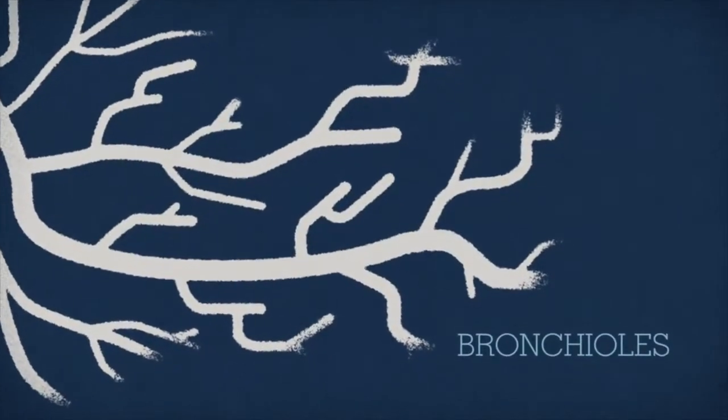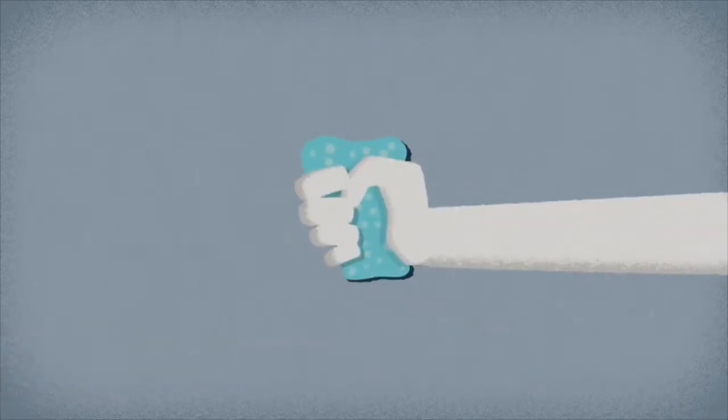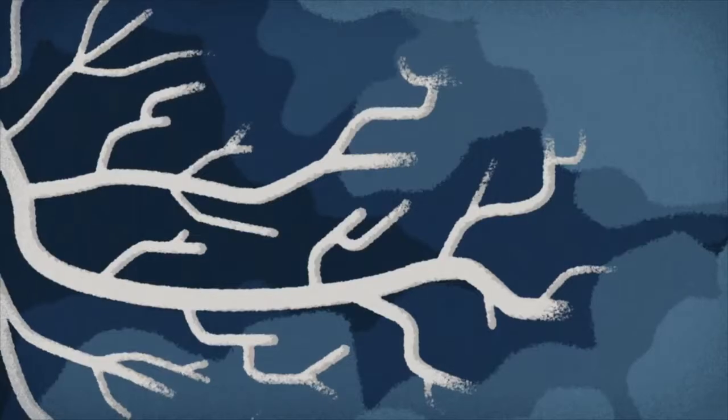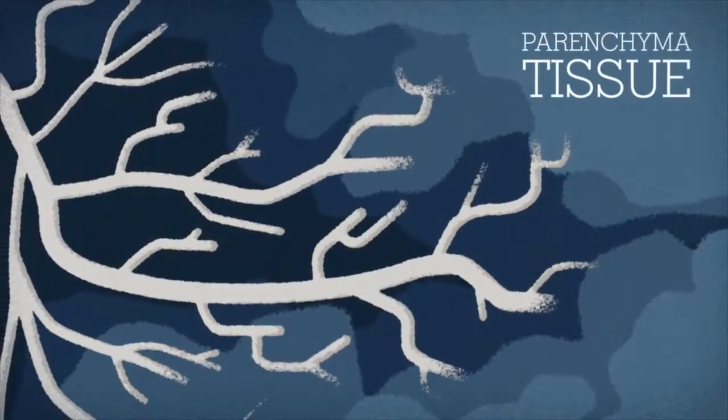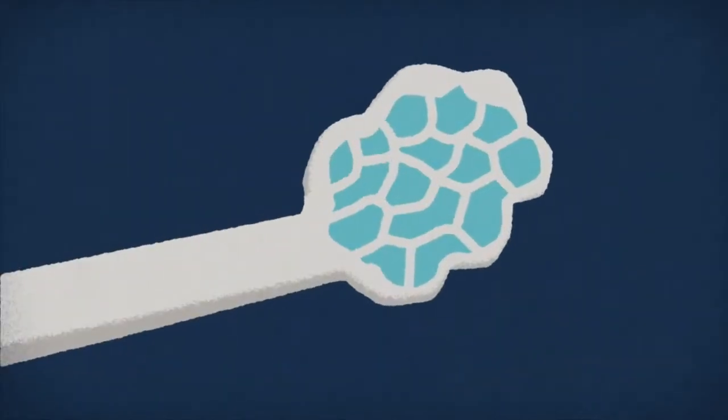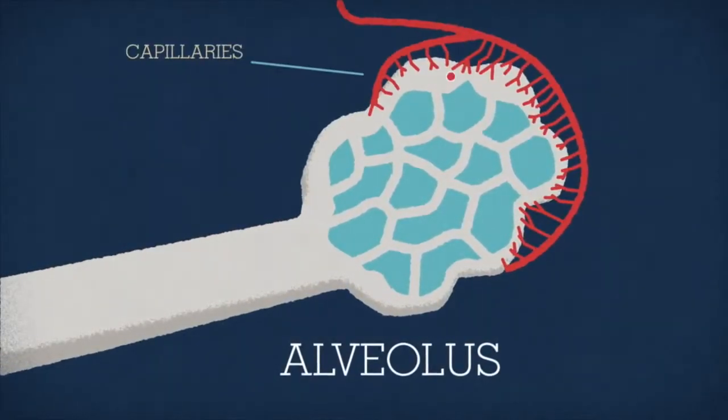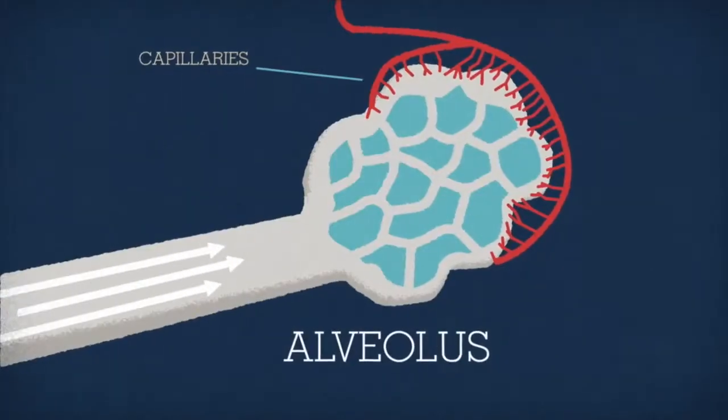Like tree branches, these small tubes divide into thousands of tinier passages called bronchioles. It's tempting to think of the lungs as huge balloons, but instead of being hollow, they're actually spongy inside with the bronchioles running throughout the parenchyma tissue. At the end of each bronchiole is a little air sac called an alveolus, wrapped in capillaries full of red blood cells containing special proteins called hemoglobin.